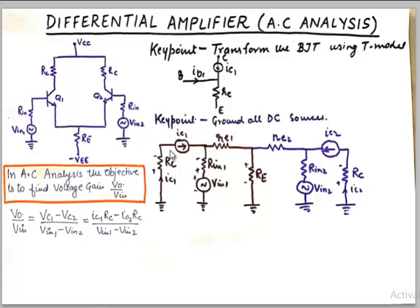And VC1 can be written as IC1 RC minus IC2 RC. So this is the voltage that I am talking about, this minus this. So if we are able to find IC1 and IC2 then everything becomes very easy because these input voltages are known to us. So if we can find IC1 and IC2 then everything becomes easy. So in other words our objective is to find IC1 and IC2.